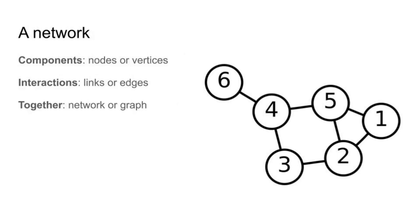Let's describe a network. As you see now, this thing that has been accompanying us for a few slides on the right — it's a network. You can see numbers there; they are the components we want to represent, and they have some lines between them which represent their interactions. The components in network terminology are either called nodes or vertices, and the interactions are called links or edges. Together, they either form a network or a graph.